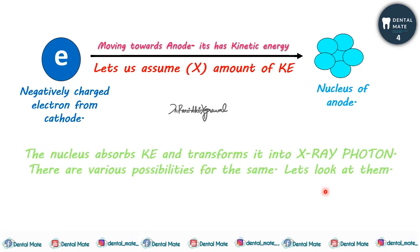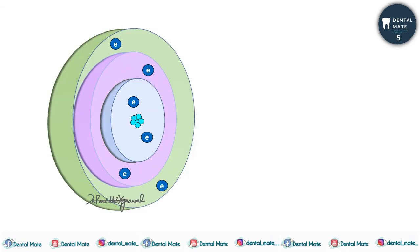The nucleus absorbs the kinetic energy and transforms it into X-ray photons. There are various possibilities for this in Bremsstrahlung radiation itself. Let's consider a diagram of an atom — it has various shells: K, L, and M shells — with a certain number of electrons present in each shell.